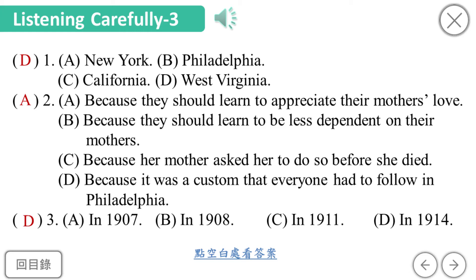By 1911, most Americans were already celebrating Mother's Day. However, it was in 1914 that the second Sunday of May was officially made a special holiday for the whole country. Since Mrs. Anna Reeves Jarvis' favorite flower was the white carnation, it was chosen to show love and gratitude toward mothers. Different colored carnations later developed different meanings. It has now become the custom to give red carnations to a living mother, while a white carnation is used to remember the love of a mother no longer alive.